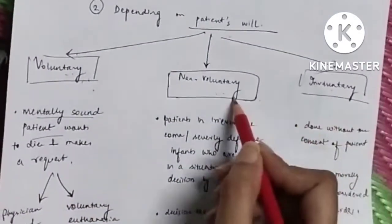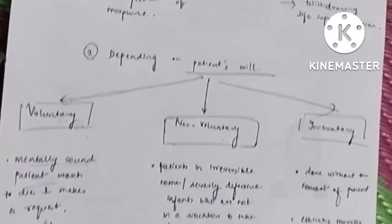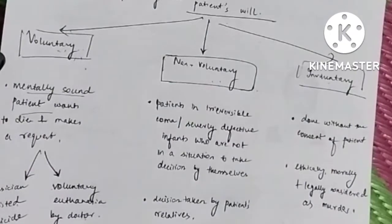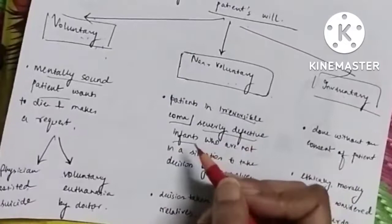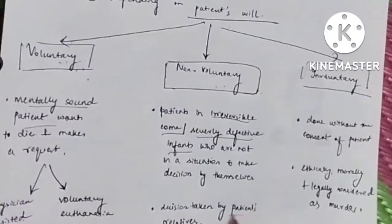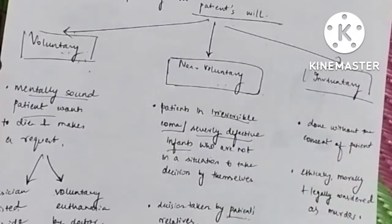Non-voluntary euthanasia means that the patient is not being able to take his or her own decisions. When will such cases arise? When the patient is in irreversible coma or when the patient is severely defective infants. So in such cases the patient's relatives will take the decision for him.